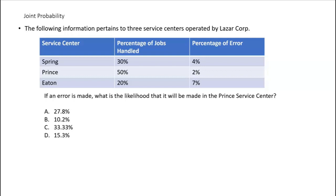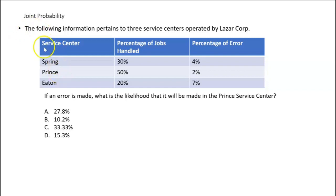Here's the question: if an error is made, what is the likelihood that it will be made in the Prince service center? We have three service centers — the Spring Center, the Prince Center, and the Eaton Center — all service centers for Lazar Corp. They want to forecast the likelihood that if an error is made in one of the service centers, what's the likelihood that it'll be made in the Prince service center, and not the Spring or Eaton service center.